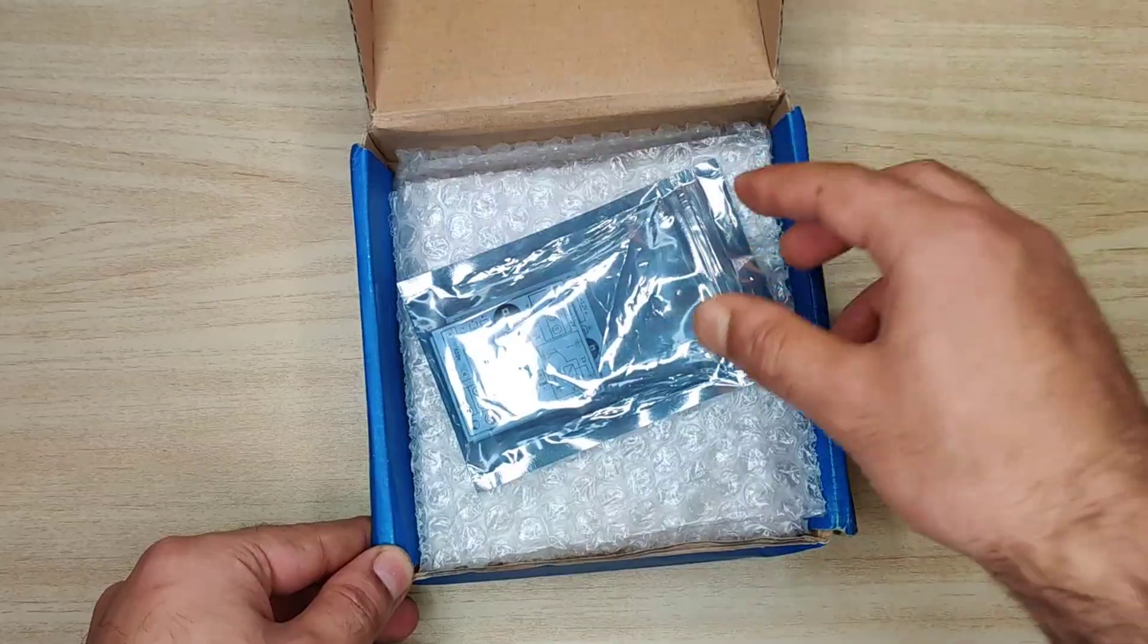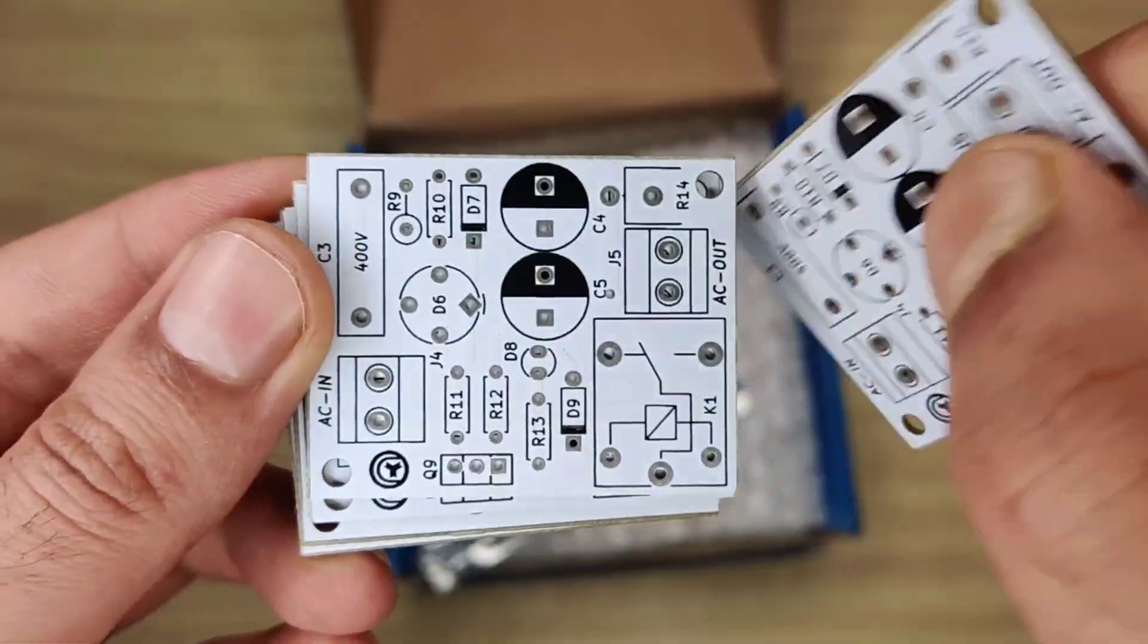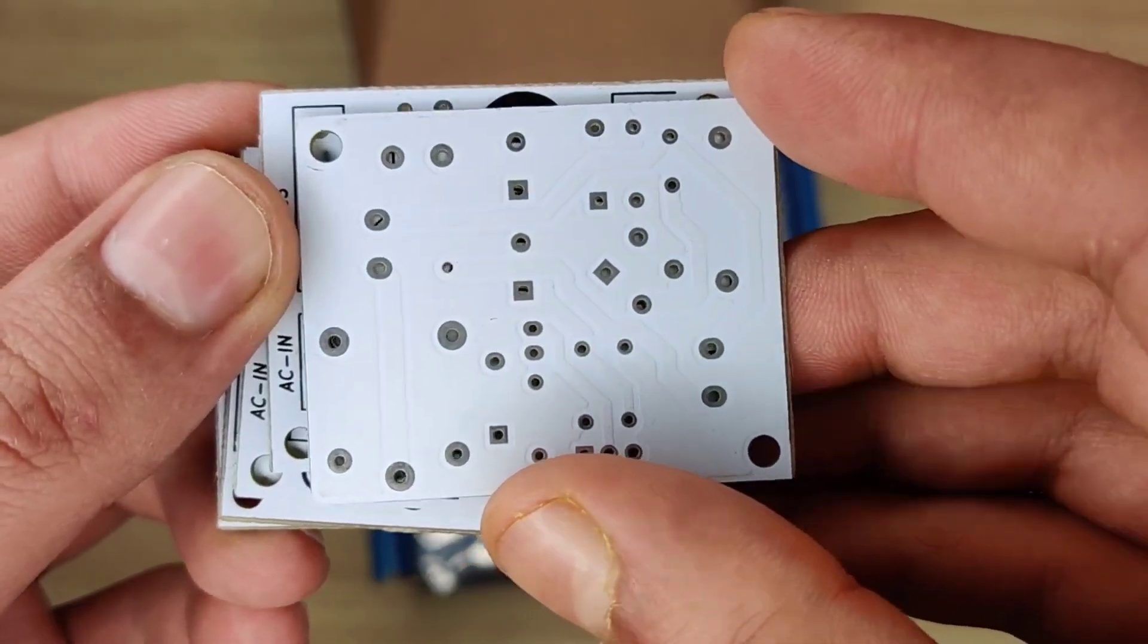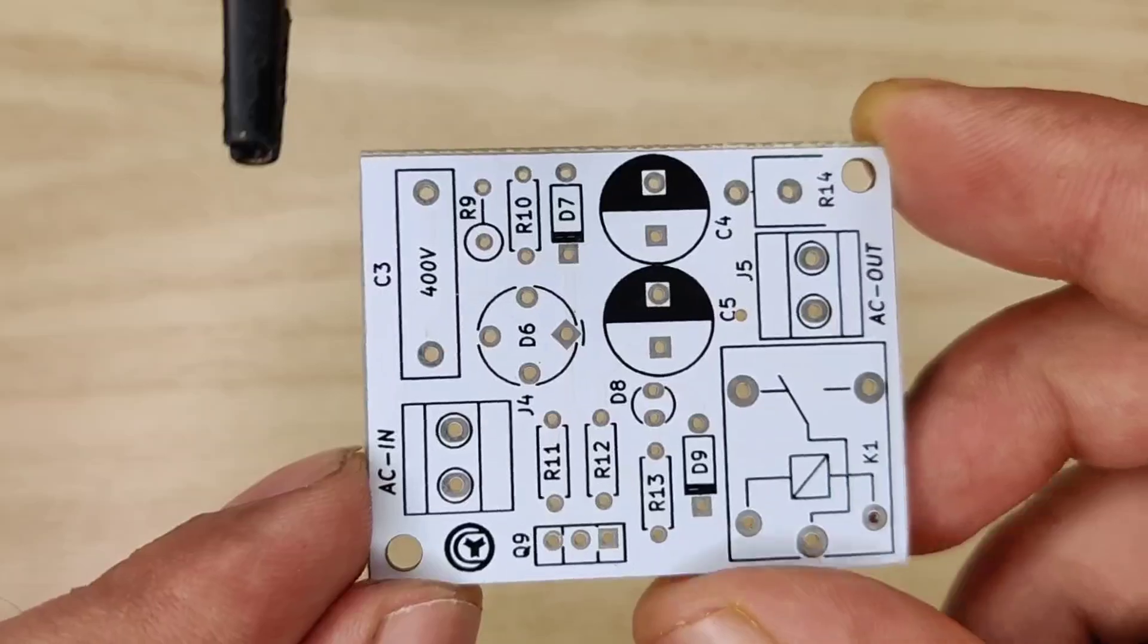Within some days I got my order from JLCPCB delivered. And the quality of the PCBs is amazing, and 5 pieces for just $2. And now it is time to assemble the PCB.